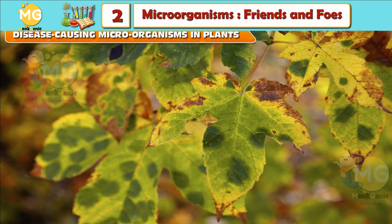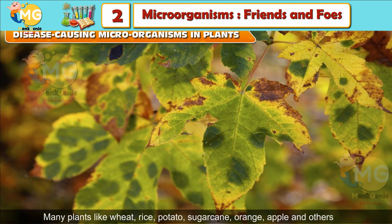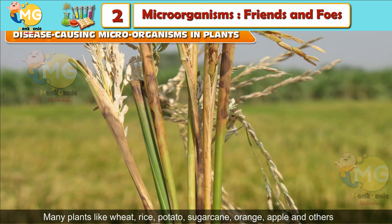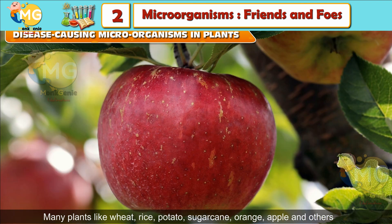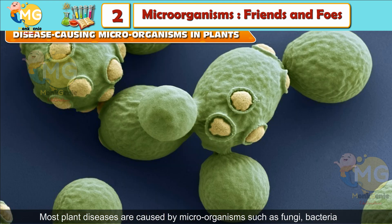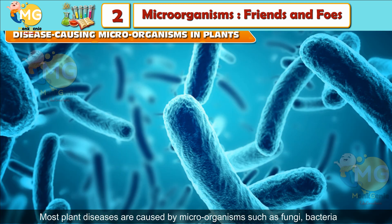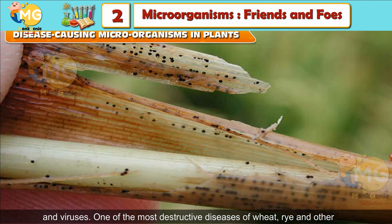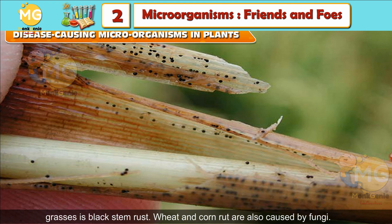Disease-causing microorganisms in plants: Many plants like wheat, rice, potato, sugar cane, orange and apple suffer from diseases which reduce the yield of crops and cause huge losses. Most plant diseases are caused by microorganisms such as fungi, bacteria and viruses. One of the most destructive diseases of wheat, rye and other grasses is black stem rust. Wheat and corn rust are also caused by fungi. These can be controlled by use of certain chemicals which kill the microbes.